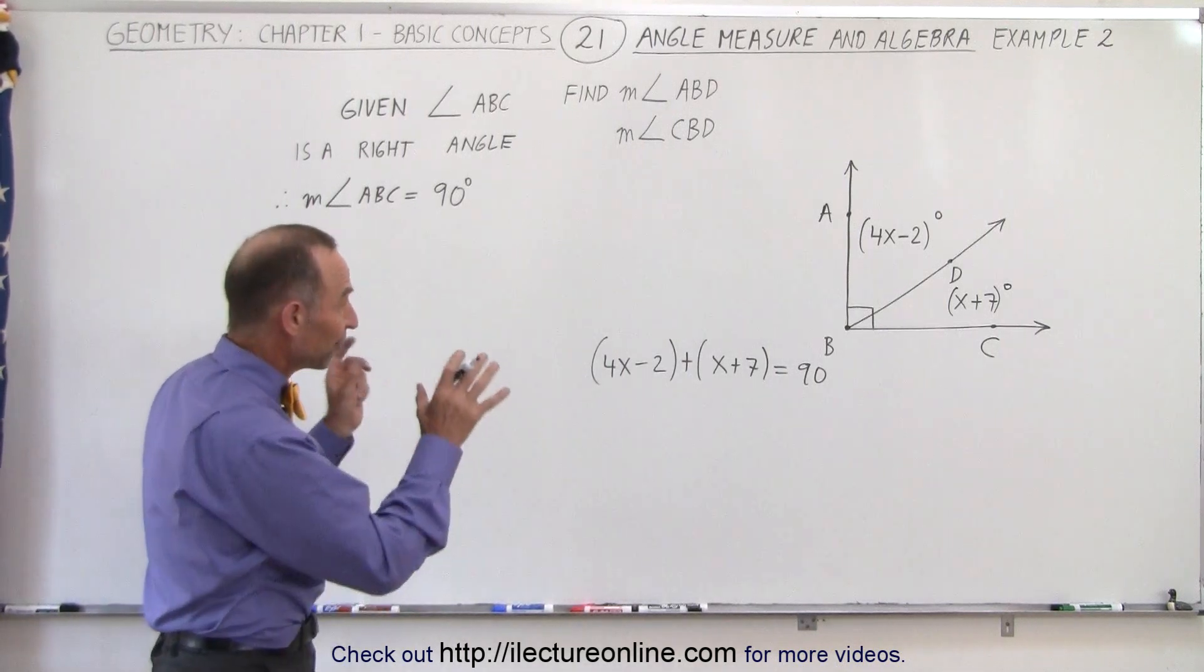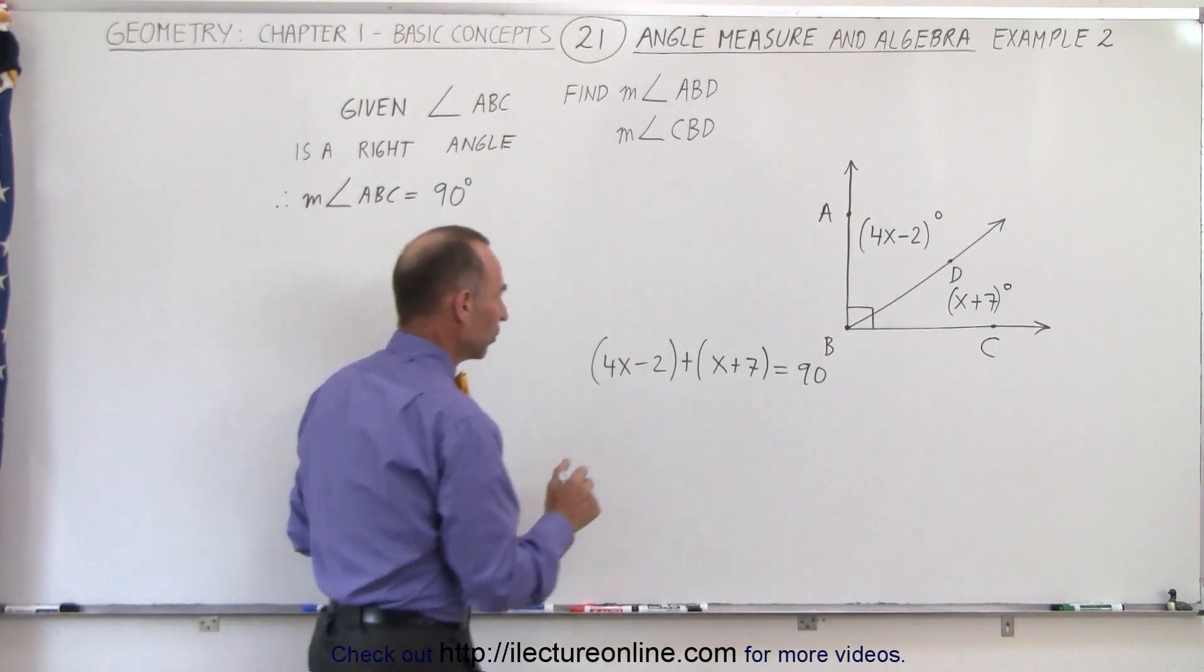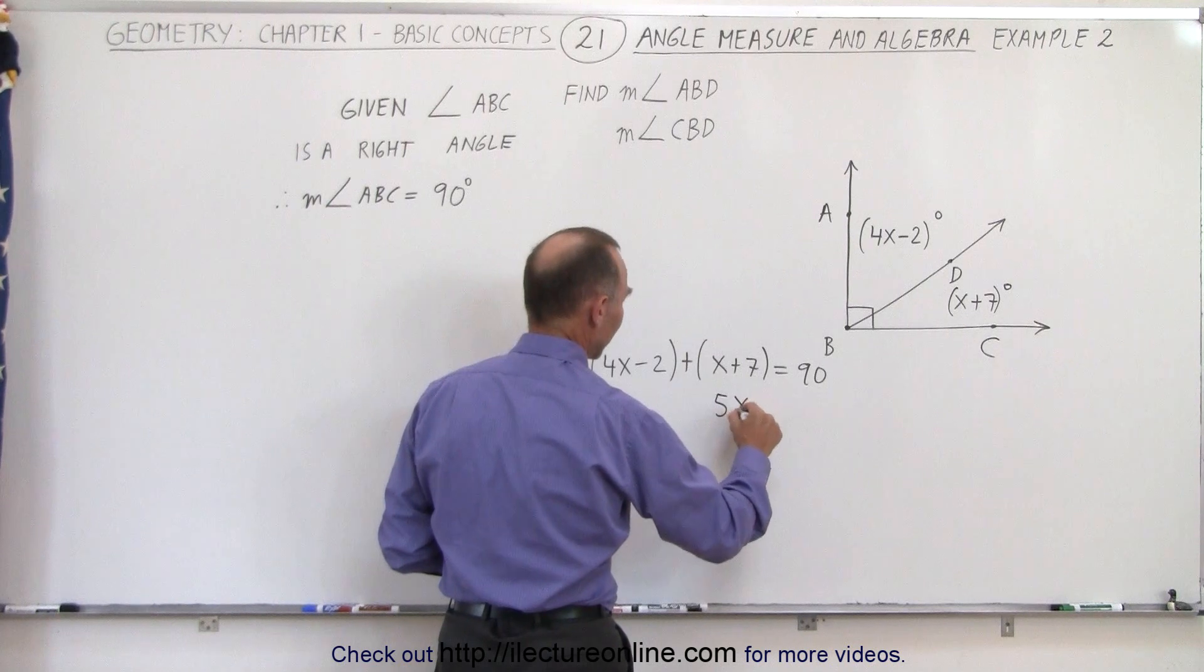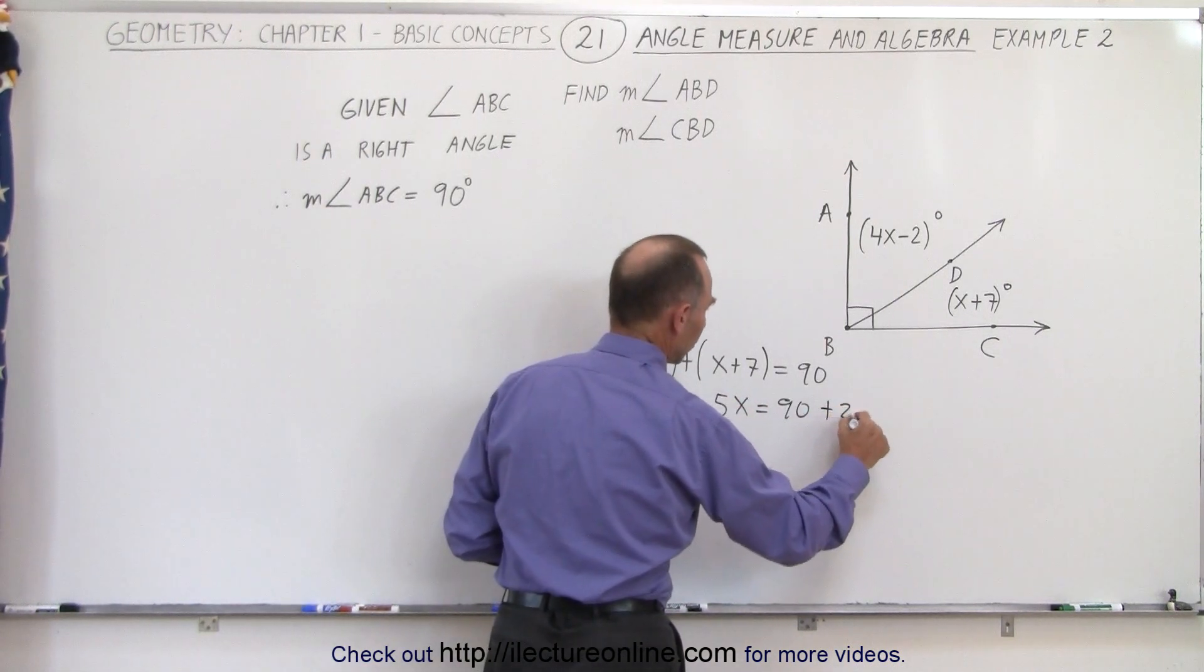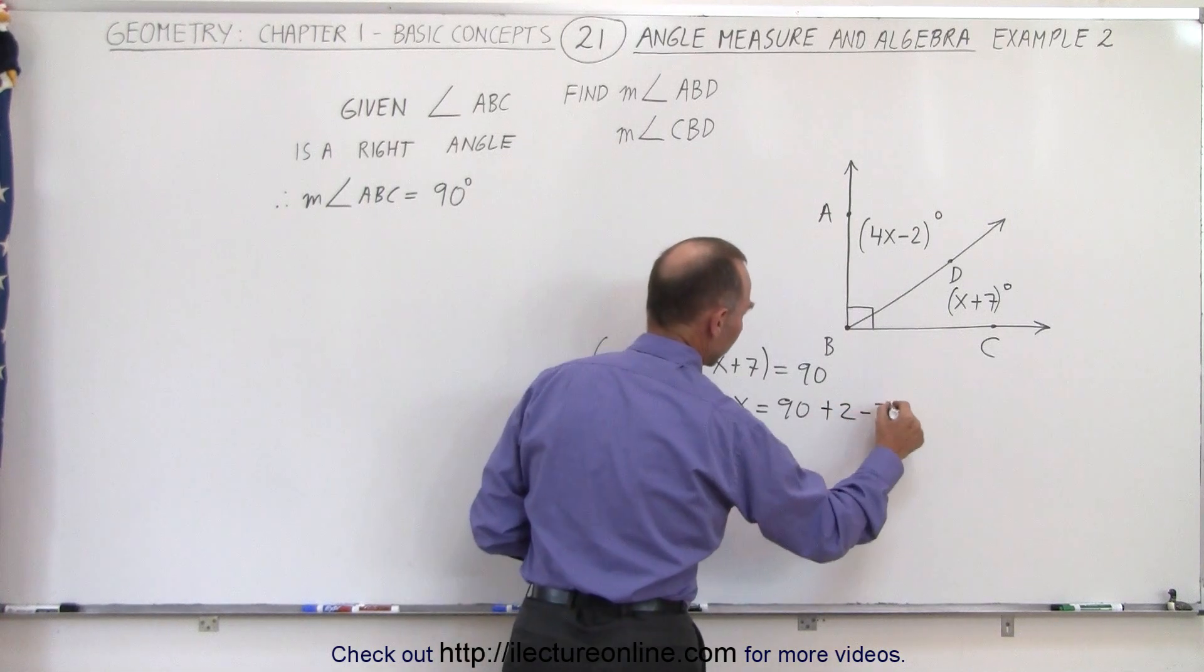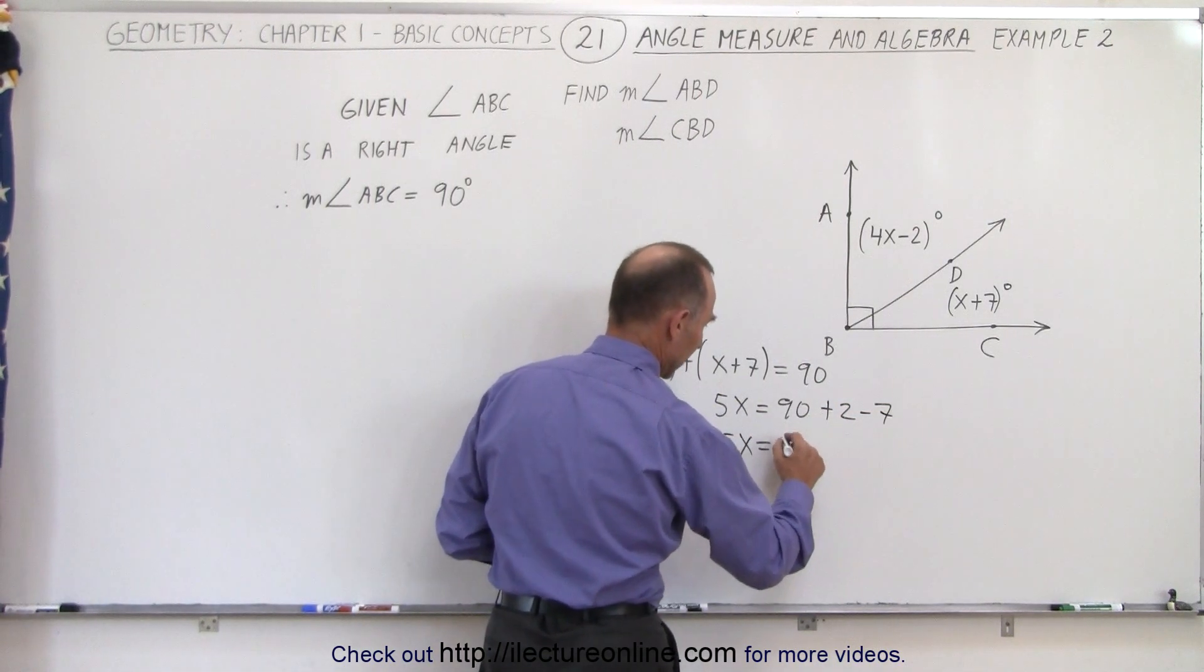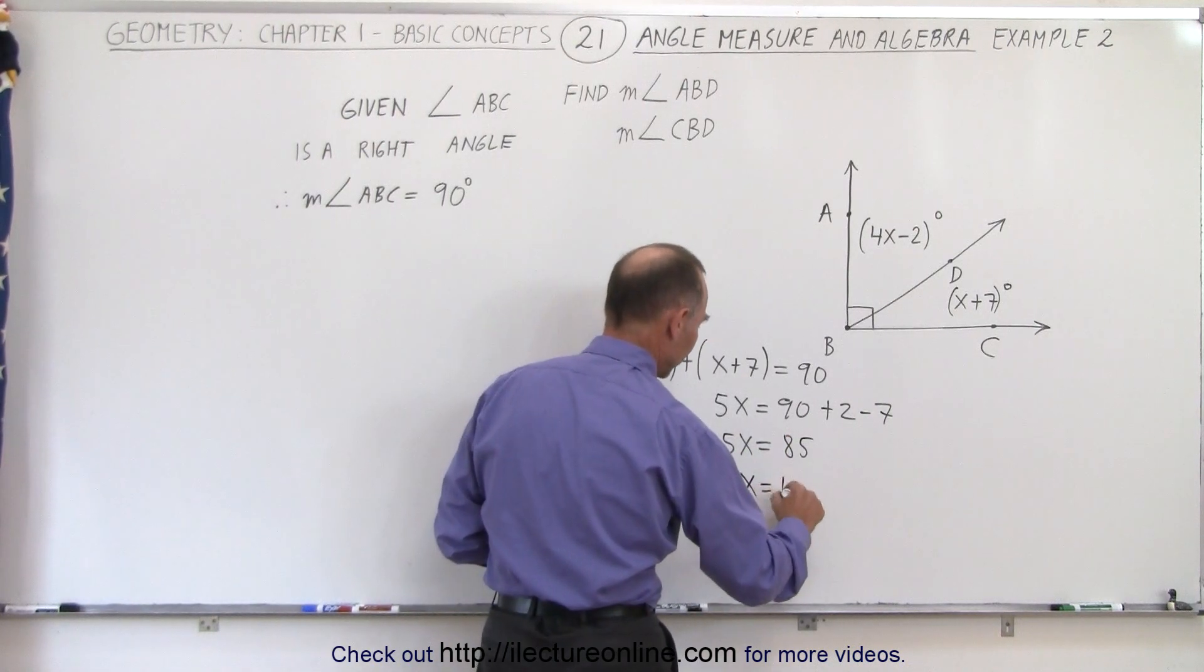What we're going to do now is find the value for x and then calculate the measures of the two angles. Combining all the x's on the left side, we end up with 5x equal to 90. The minus 2 goes across and becomes plus 2, and the plus 7 goes across and becomes minus 7, which means 5x equals 85. Dividing both sides by 5, we get x equals 17.